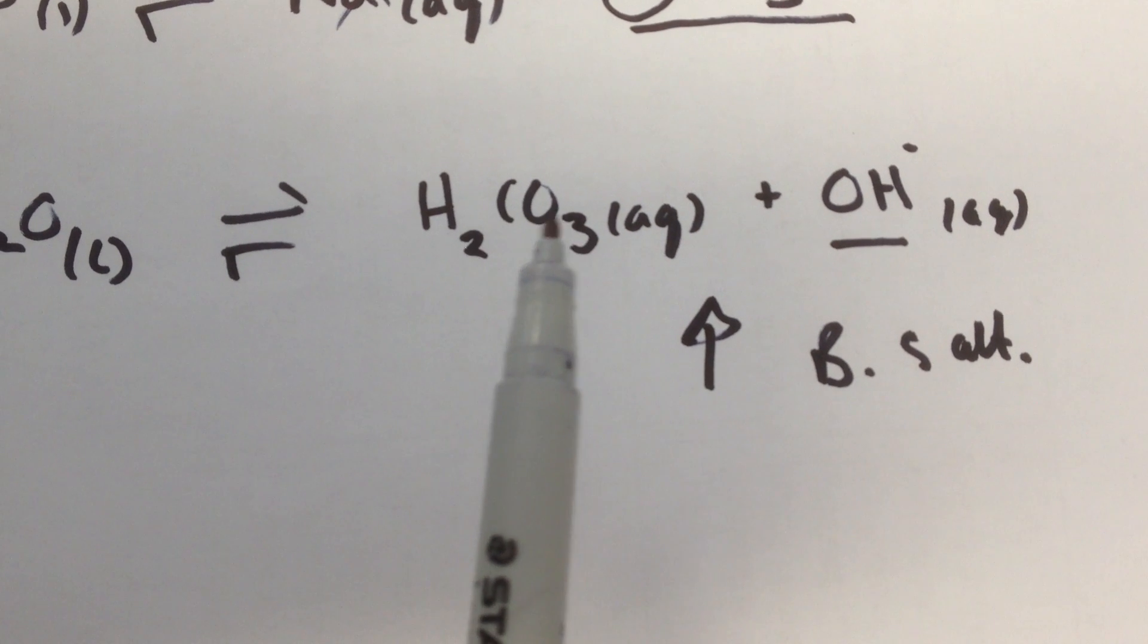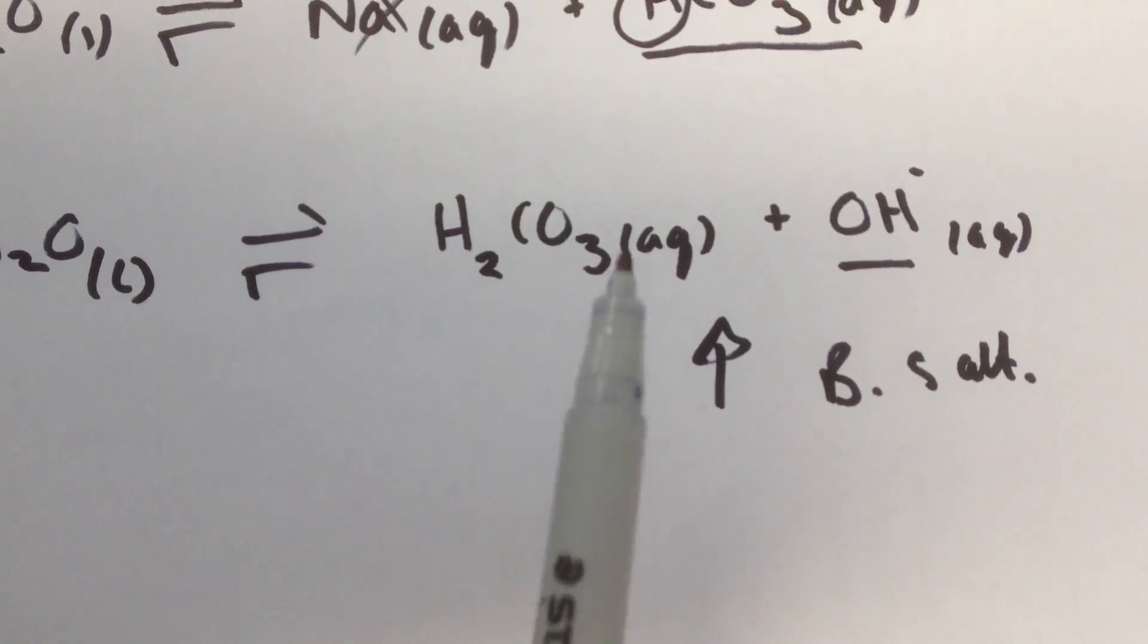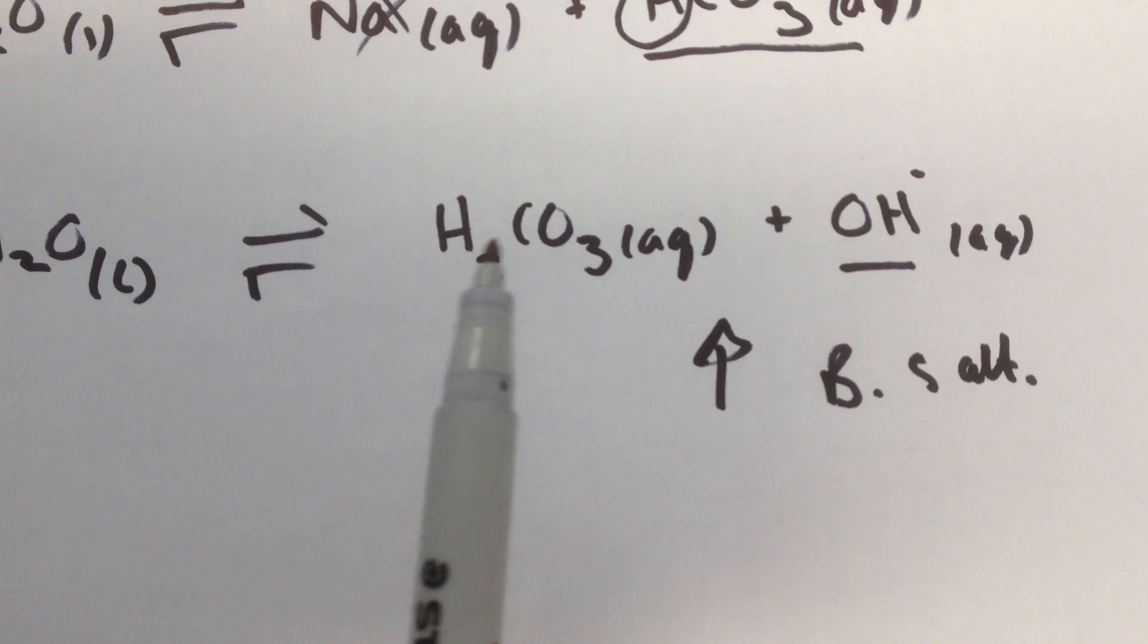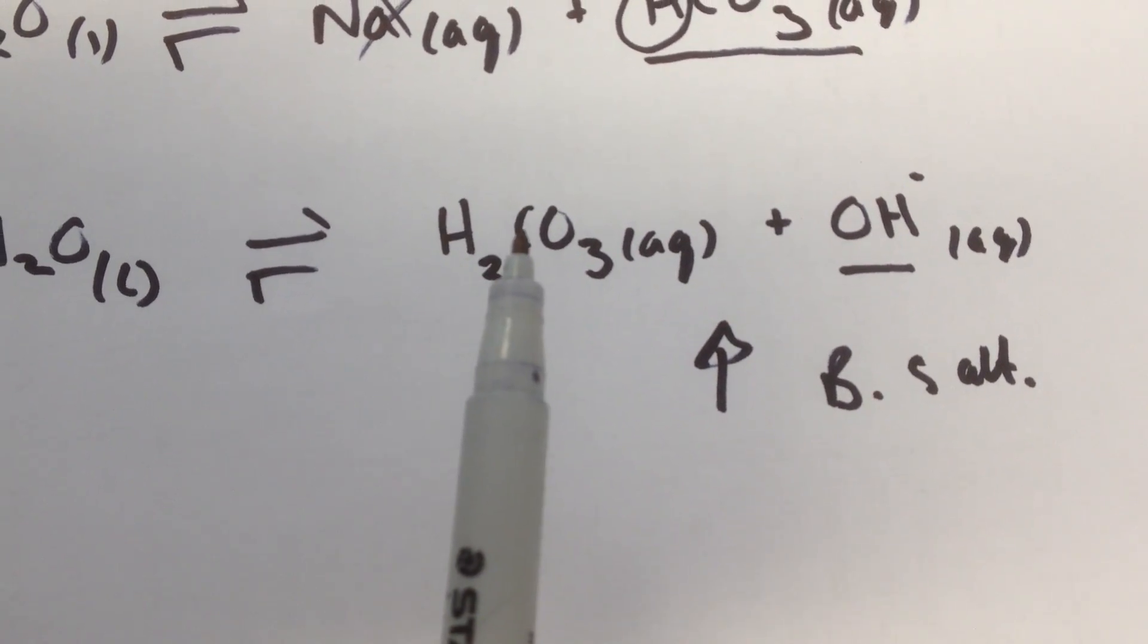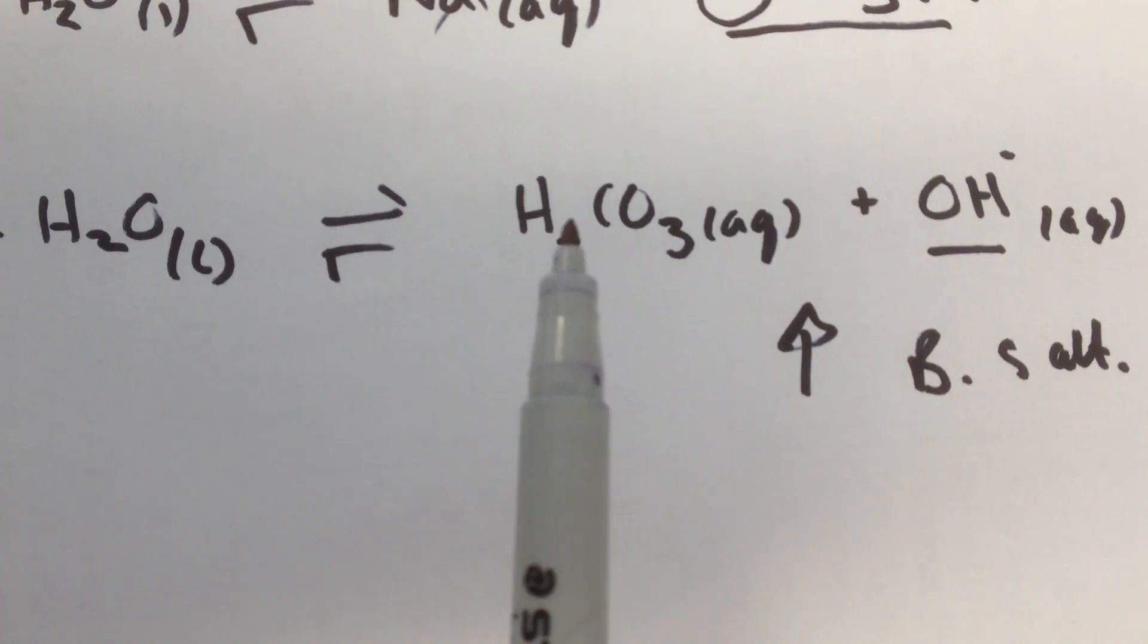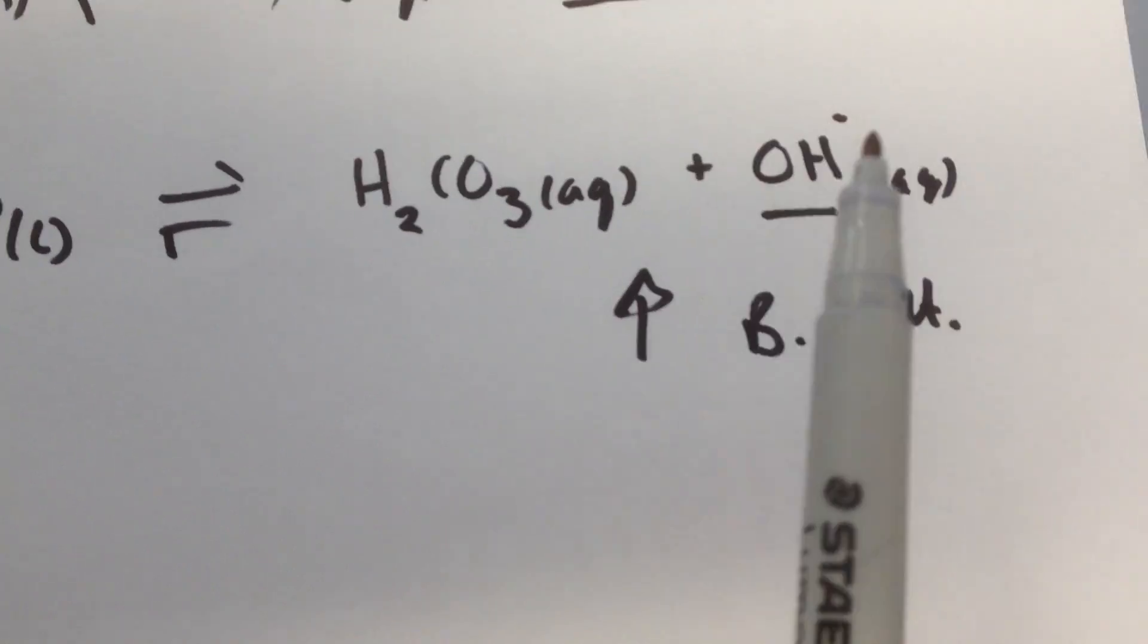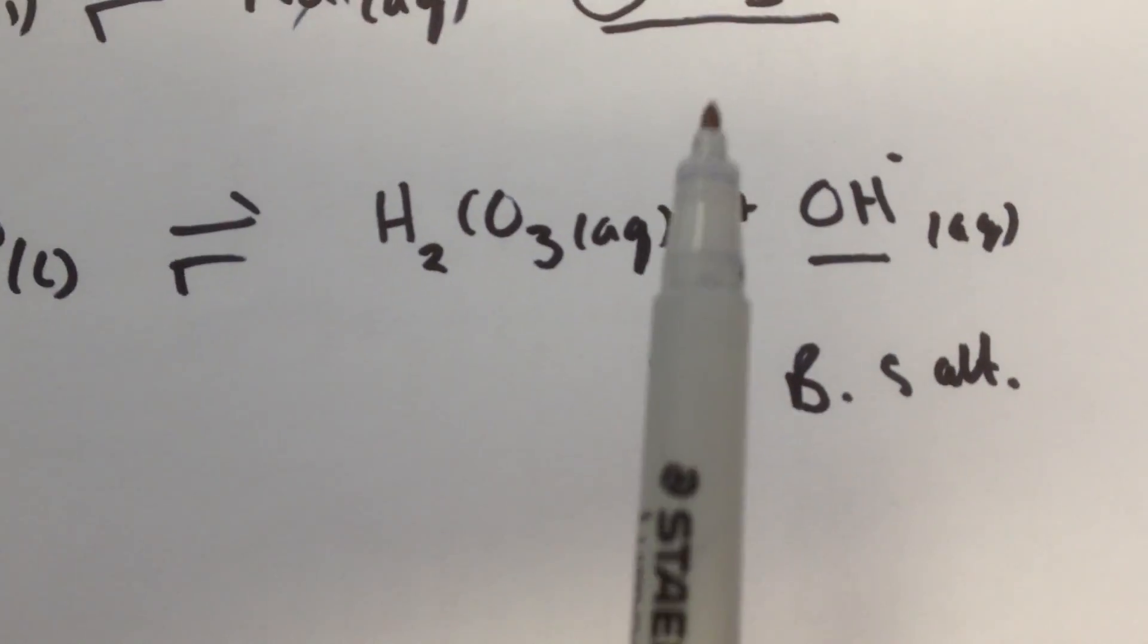So the fact that these hydrogens are now bound up in hydrogen carbonate means that they are not free in solution to form something like a hydronium ion. They're bound to the carbonate leaving behind OH⁻ and so the pH rises.